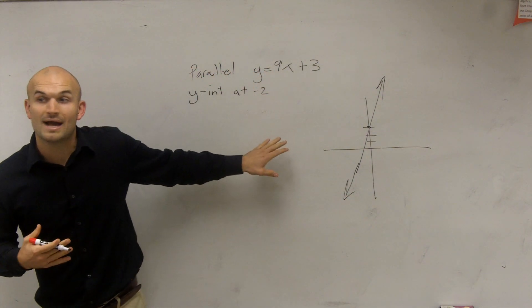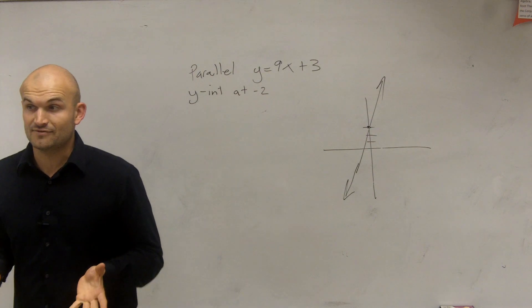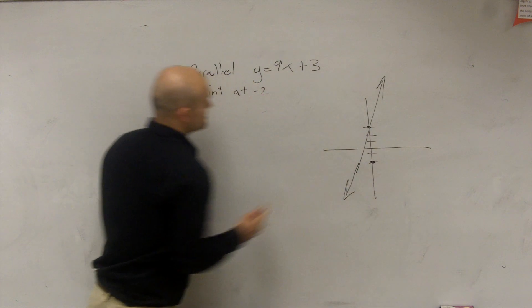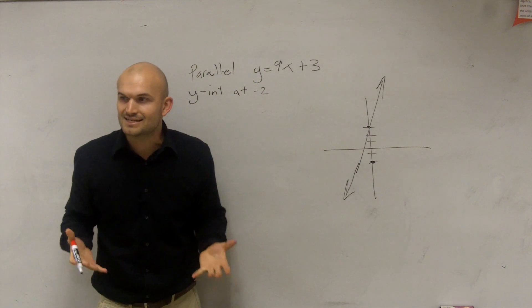Now, they're asking us for a y-intercept at y equals negative 2. So y equals negative 2, you guys can see that's going to be down there. It's not going to be the exact same parallel line.